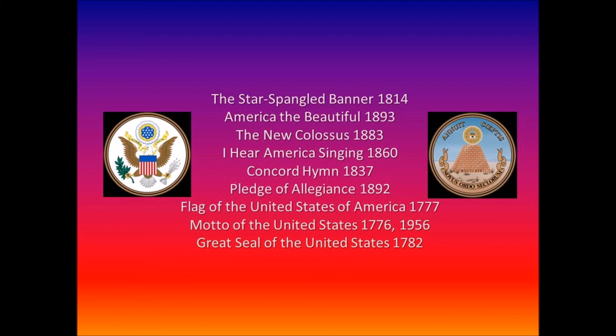The reverse side contains a thirteen-step pyramid, with the year 1776 in Roman numerals at its base. Above the pyramid is the Eye of Providence, and the motto 'Annuit Coeptis,' meaning 'He favors our undertakings.' Below the pyramid, 'Novus Ordo Seclorum,' meaning 'New Order of the Ages,' is written on a scroll to signify the beginning of the new American era. The obverse side of the Great Seal is used on postage stamps, military uniforms, U.S. passports, and above the doors of U.S. embassies worldwide. Both sides are present on the one-dollar bill.